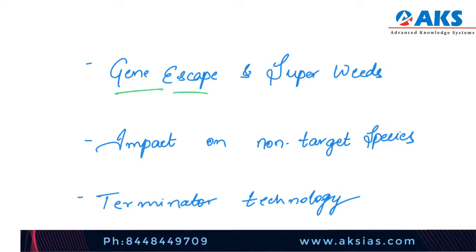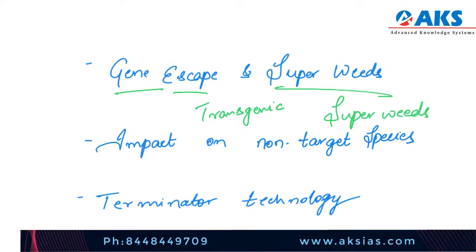Next is gene escape and super weeds. There is a belief among some opponents of genetic engineering technology that transgenic crops might cross-pollinate with related weeds, possibly resulting in super weeds that become more difficult to control. There could be genetic mutations that take place with biotechnology-engineered crops along with transgenic weeds and related weeds, leading to the growth of super weeds which become extremely difficult to control.